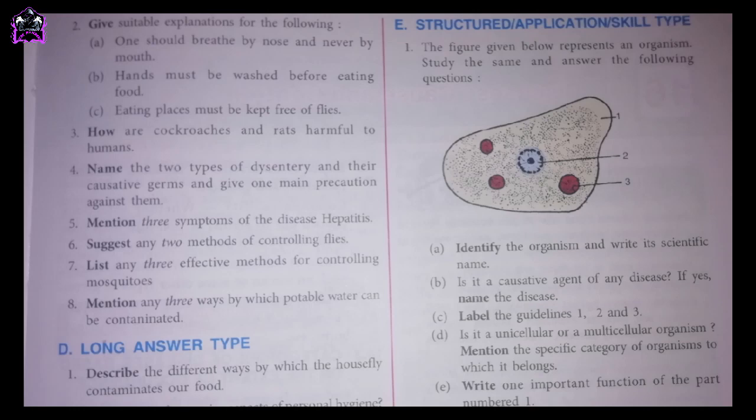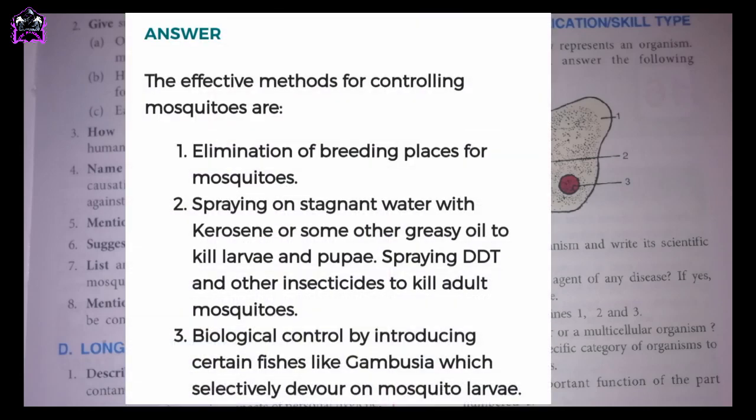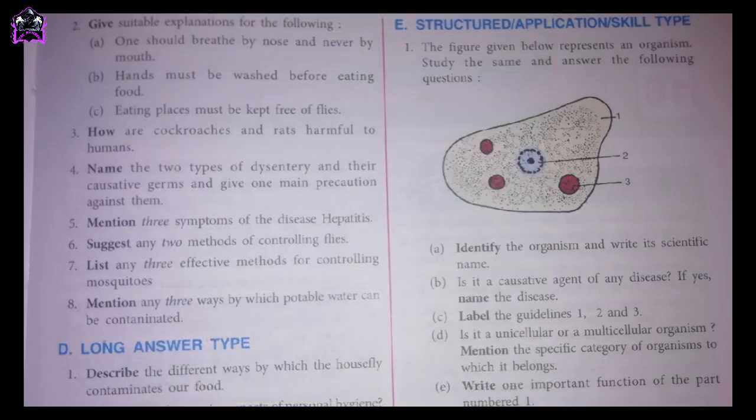Seventh one: list any three effective methods for controlling mosquitoes. The effective methods for controlling mosquitoes are: 1. Elimination of breeding places for mosquitoes. 2. Spraying stagnant water with kerosene or some other greasy oil to kill larvae and pupae, and spraying DDT and other insecticides to kill adult mosquitoes. 3. Biological control by introducing certain fishes like Gambusia, which selectively devour mosquito larvae.